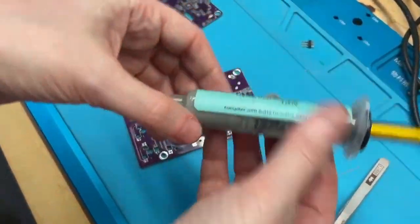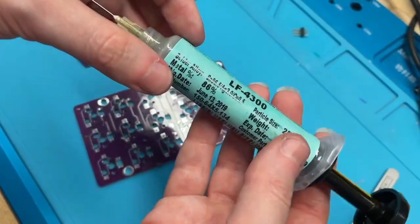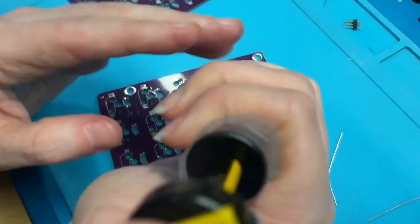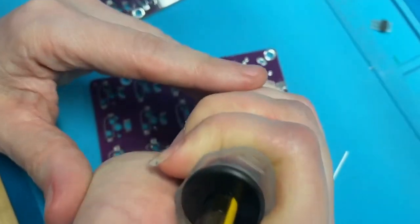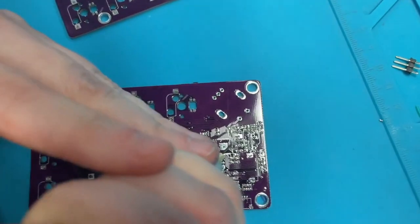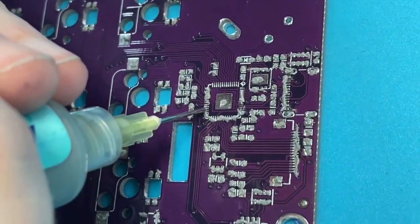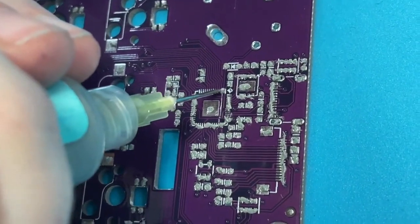The way I do this is I actually have solder paste in this little dispenser and I've got a nice fine tip on it. Then I very carefully squeeze paste onto the pads. I try to get it as clean as possible. I'm going to have to clean this up later with my soldering iron, but you just want to get it good enough so that the components sit in the right place.